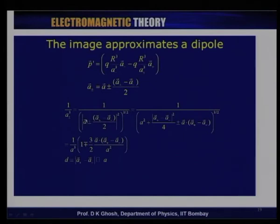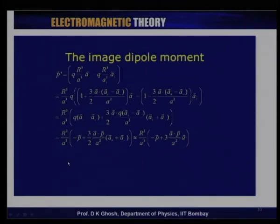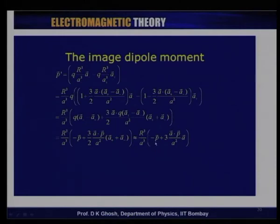With the approximation that the dipole length |a₊ − a₋| is much smaller than the distance a, one can show that there is an image dipole moment proportional to (R³/a³) times the negative of the object dipole moment, plus an additional term proportional to 1/a⁵ (with the prefactor of order 1/a⁴).